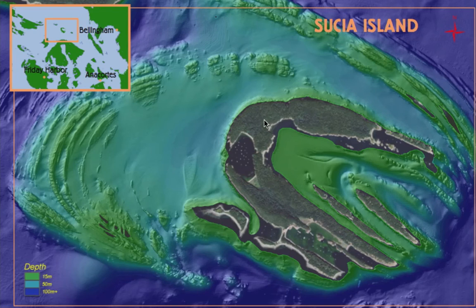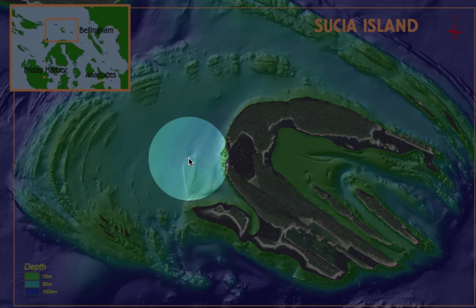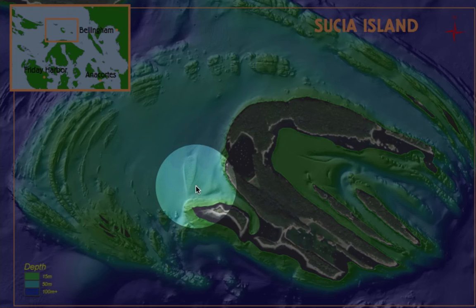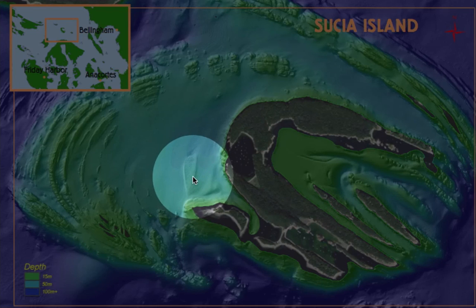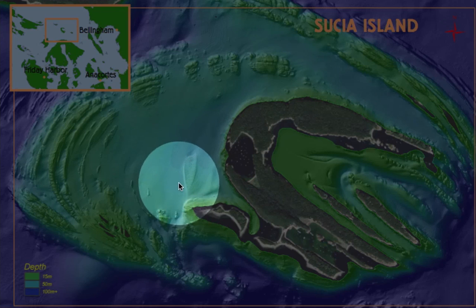Other features that you can see here that are important — and certainly important biologically — is this very unique sand wave field that I'm showing right here. This sand wave field is a habitat for Pacific sand lance. It is not only a habitat for sand lance that burrow into the sands in this area, but it is a large feeding area for salmon. Salmon feed off of sand lance, so this bank is historically a very, very popular salmon fishing ground.